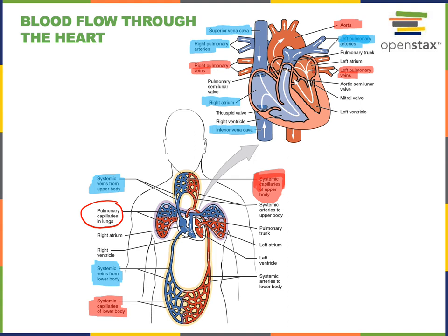This blood is then pumped from the right atrium down into the right ventricle. The ventricle is the larger, more inferior chamber that pumps blood into the arteries. The right ventricle pumps blood into the pulmonary arteries, and this blood flows into the lungs where it becomes oxygen-rich at the pulmonary capillaries, then drains through the pulmonary veins back to the heart, entering the left atrium. Both the left and right pulmonary veins drain blood into the left atrium.